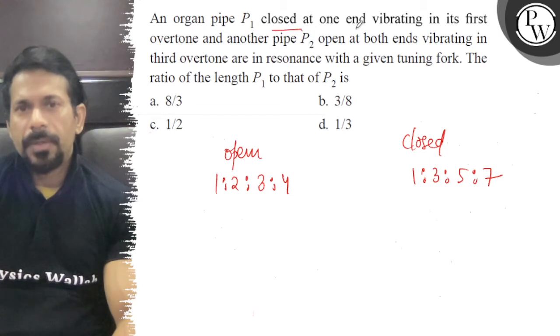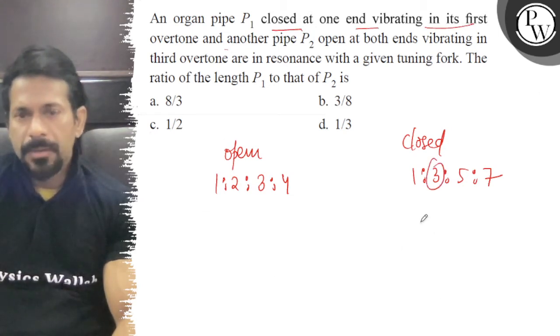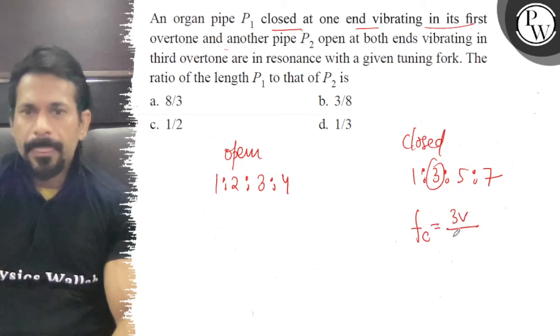If I say closed at one end vibrating in first overtone, this is first overtone. So f_closed is equal to 3V by 4L.